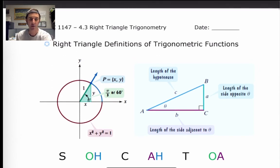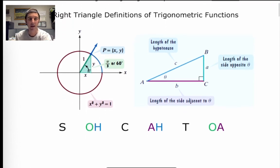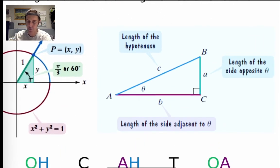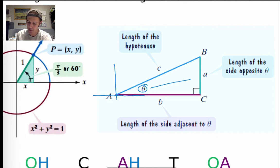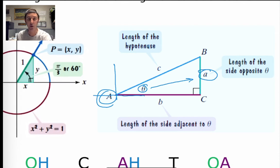Here we've got right triangle definitions of trig functions. We've talked about this in the previous video. If you look at the right-hand diagram, there's a theta by angle A, which I've been calling the reference angle. The capital letter will be the angle measure, and the lowercase of that same letter will be the corresponding side length that is opposite that angle.